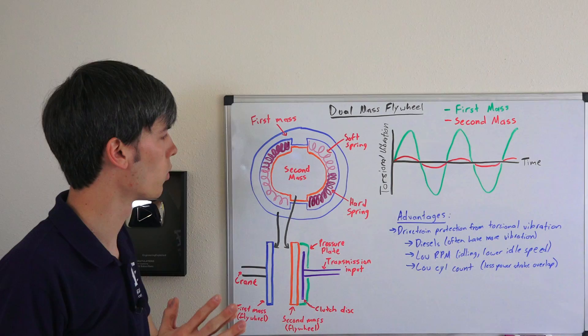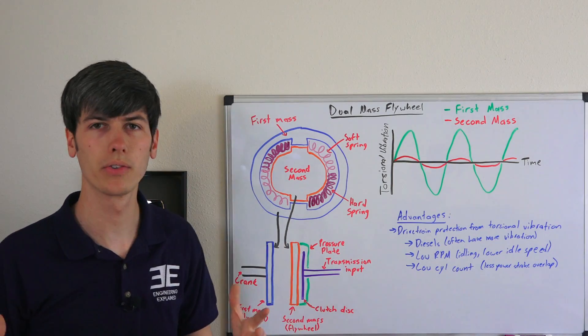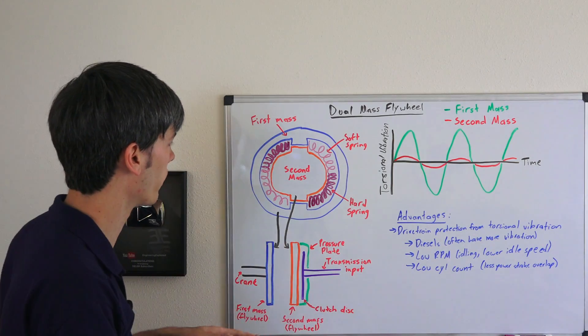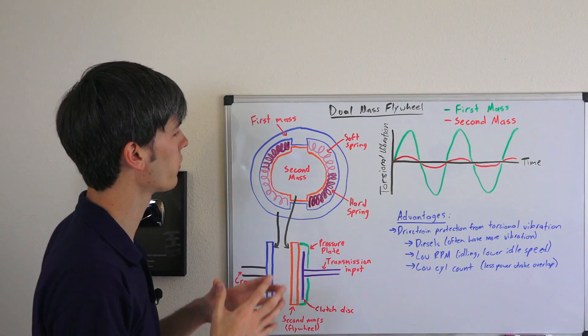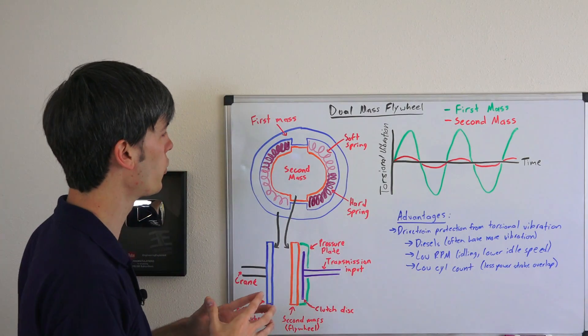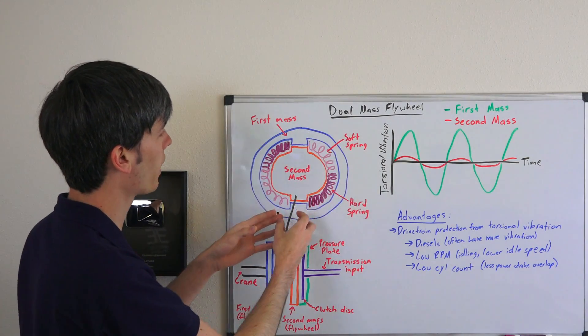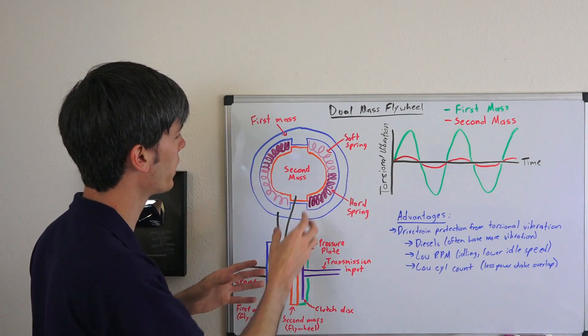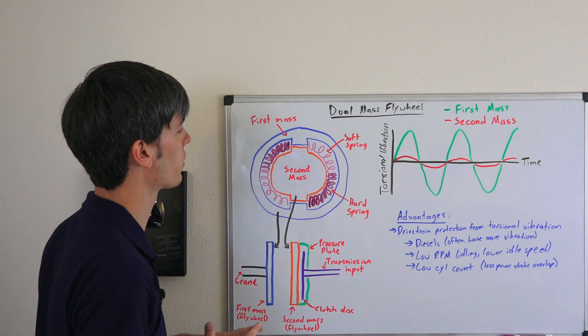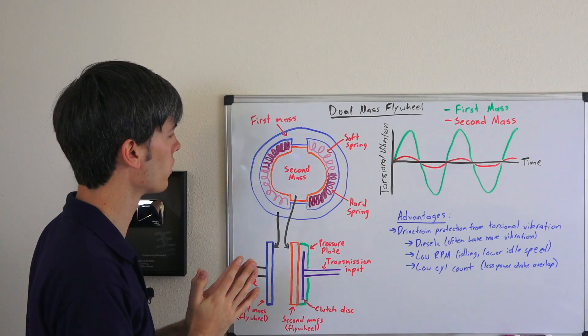So how does a dual mass flywheel work? Well first let's look at all the components involved and then talk about the process. Here we're looking at the dual mass flywheel. It gets its name because it has two masses - the first mass is this outer portion and the second mass is the inner portion as I've drawn here.